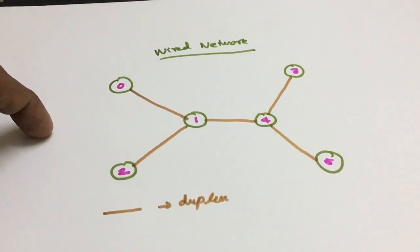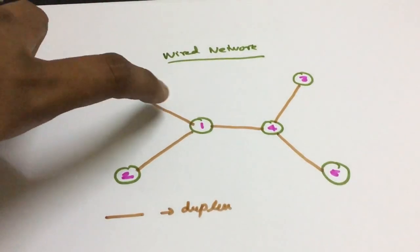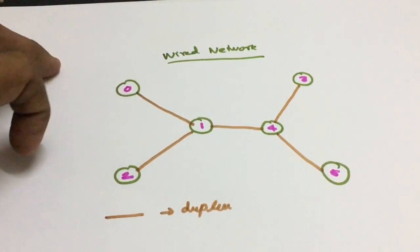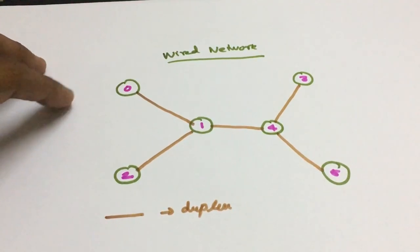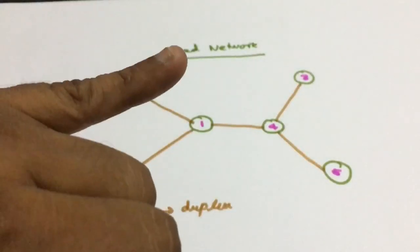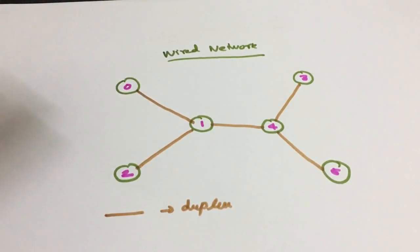Duplex means both-side transmission is possible. When node 1 sends packets to node 2, node 2 can also send packets back to node 1. In a wired network, since a line is involved, we need two parameters: bandwidth and data rate. Bandwidth decides how much data I want to send on the link, and data rate decides at what speed the data will be sent. High bandwidth with small data rate indicates a very fast link.